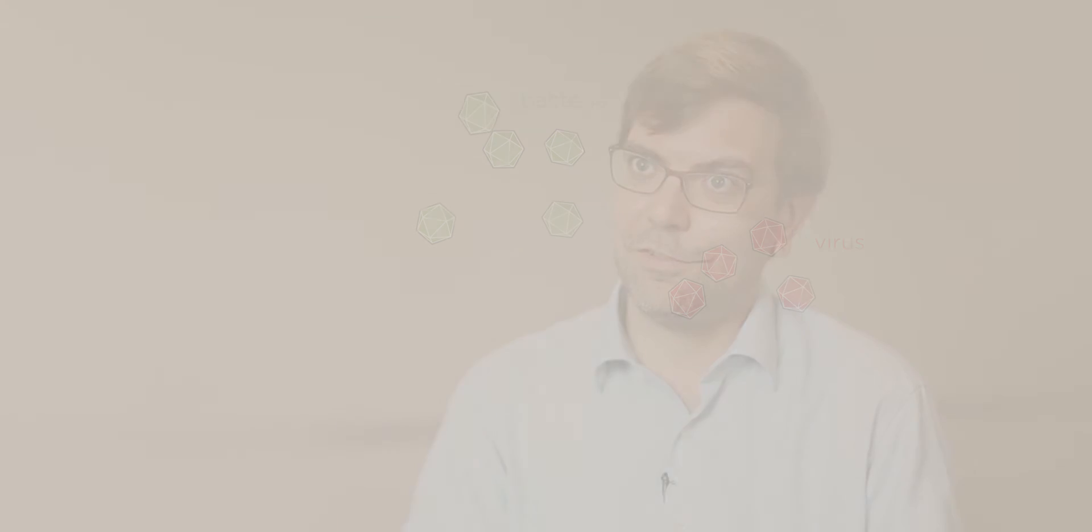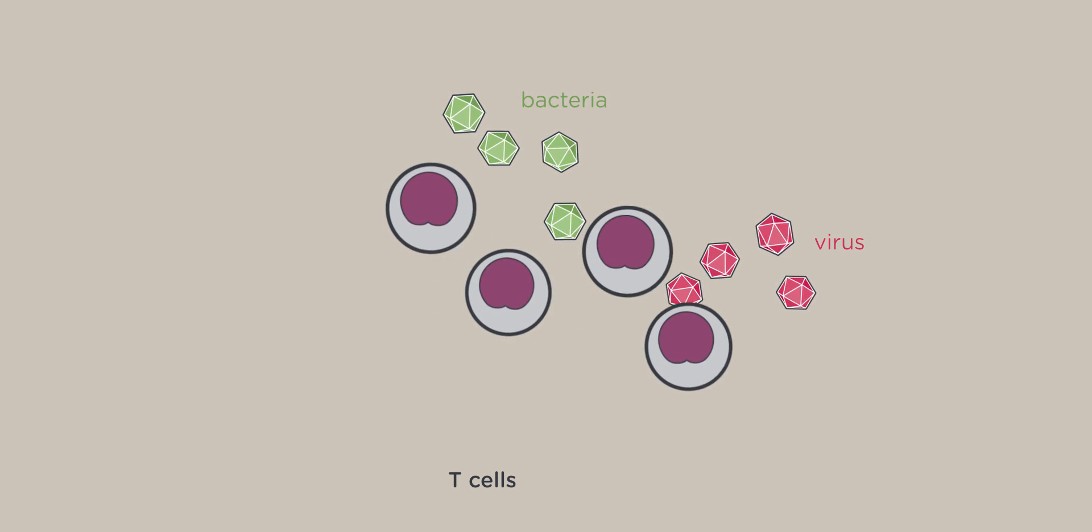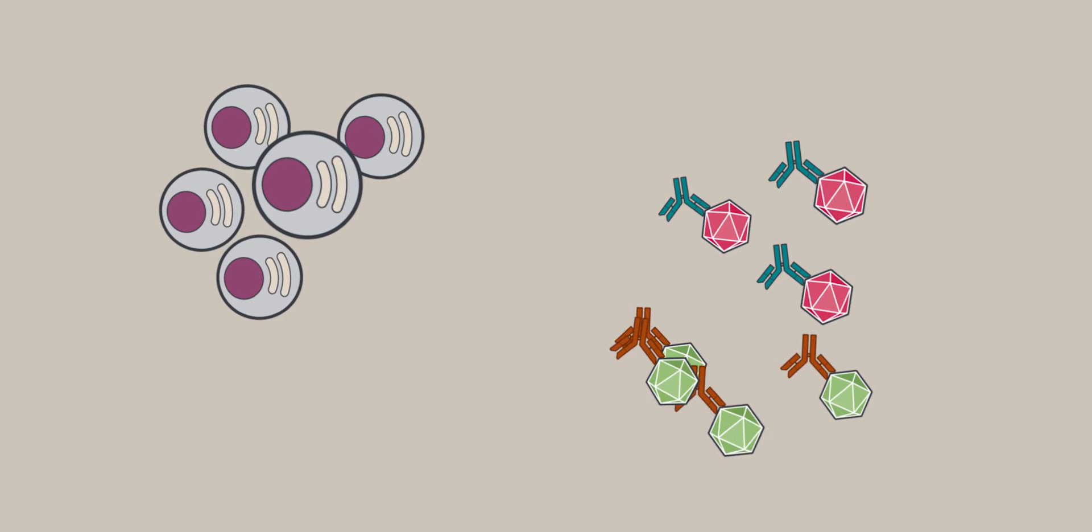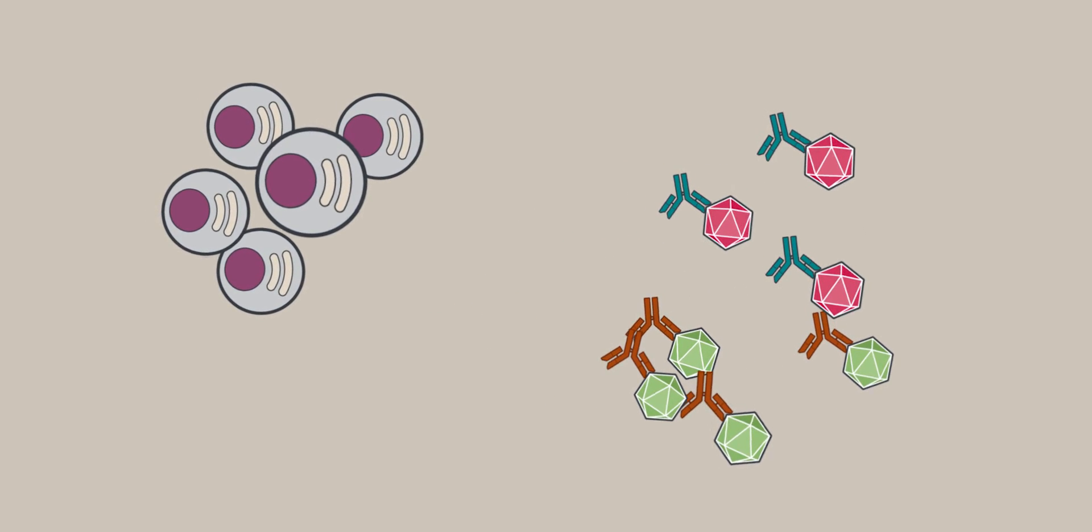The immune system is our body's defense system and it protects us from invading organisms such as bacteria or viruses. There are cellular components such as T cells that directly attack bacteria or viruses, and there are other cells that produce proteins that float in the blood and tag these organisms for destruction.